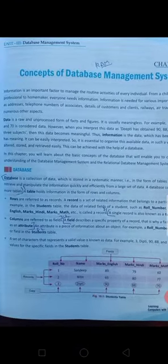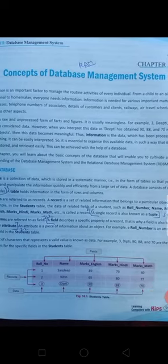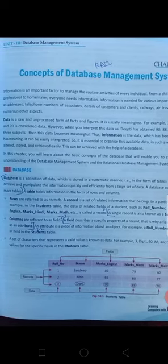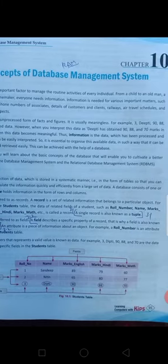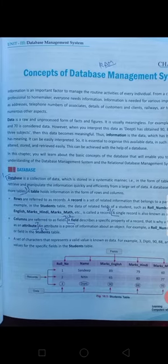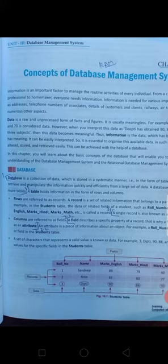A database is a collection of data which is stored in a systematic manner in the form of tables, so that we can retrieve and manipulate the information quickly and efficiently from a large set of data. A database consists of one or more tables. A table holds information in the form of rows and columns. Data is always stored in a table, and tables contain rows and columns.